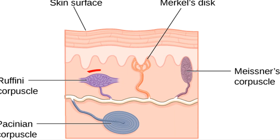Ruffini's corpuscles are also known as bulbous corpuscles. They are sensitive to skin stretch and provide kinesthetic sense of finger position and movement — that is, the sense of position and movement of body parts. Like Meissner's corpuscles, they detect low frequency vibrations, but unlike them, Ruffini's corpuscles are slowly adapting. They are found in the dermis of hairy skin.